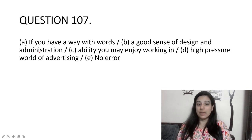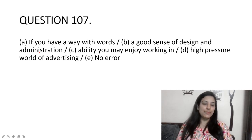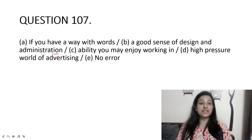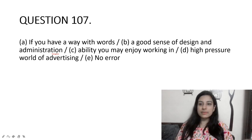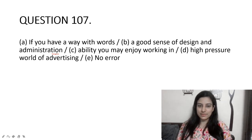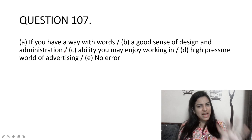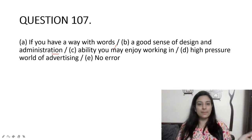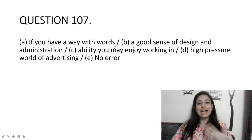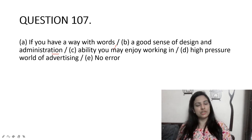If you have a way with words, a good sense of design, and administration ability, you may enjoy working in the high pressure world of advertising. The answer is option B: 'administration ability' is wrong because 'administration' is a noun and 'ability' is also a noun — you cannot place two nouns together like that. You need the adjective form: 'administrative ability.' 'Having a way with words' means you can speak or communicate well and convince people.